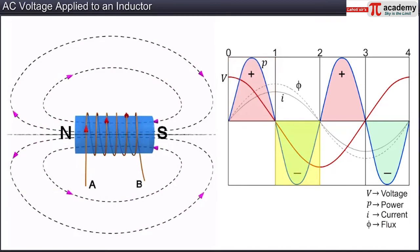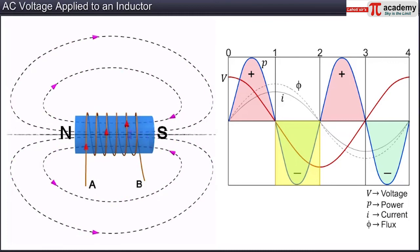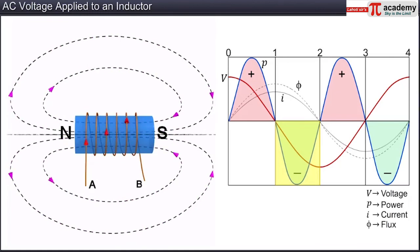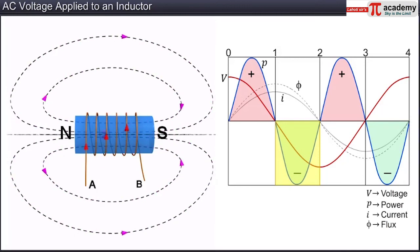In the second time interval 1-2, the value of the current keeps decreasing from its peak value at one-fourth of its time period and reaches zero, but it always remains positive. The flux passing through the coils changes, decreasing the magnetic field set up as shown in the figure. As the current is positive while the voltage has become negative, it means the power is negative. Negative power means the inductor is releasing energy to the source, which is the circuit.